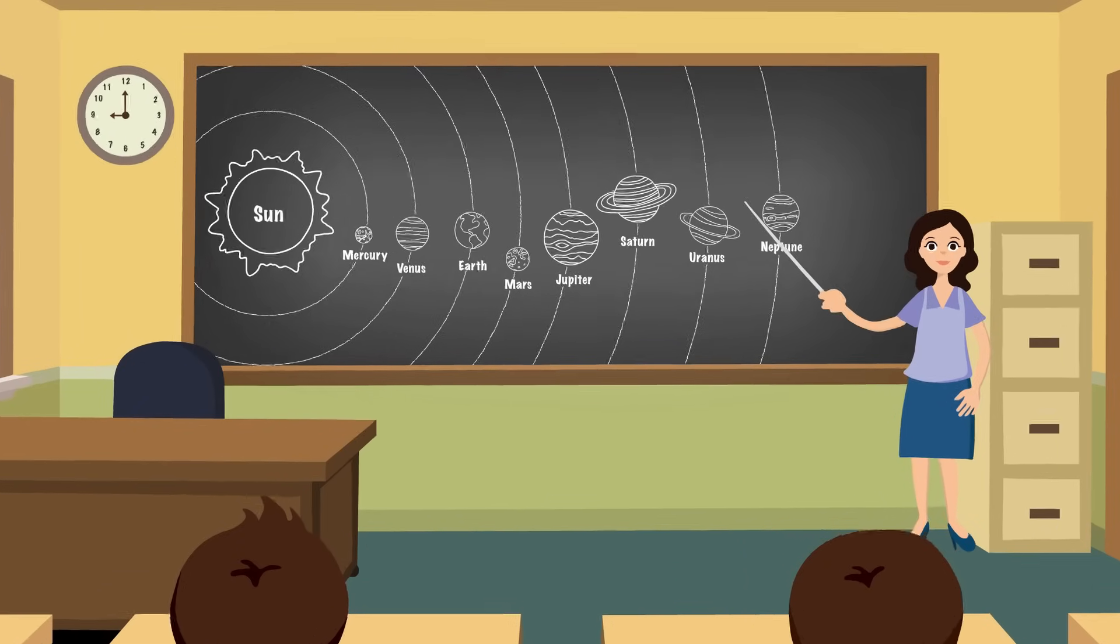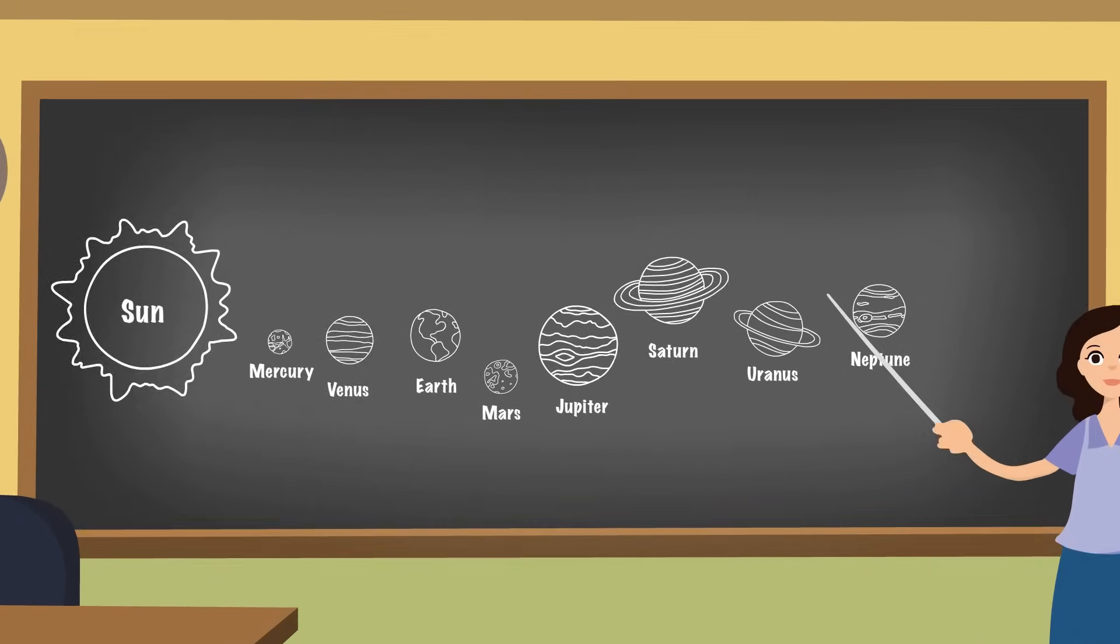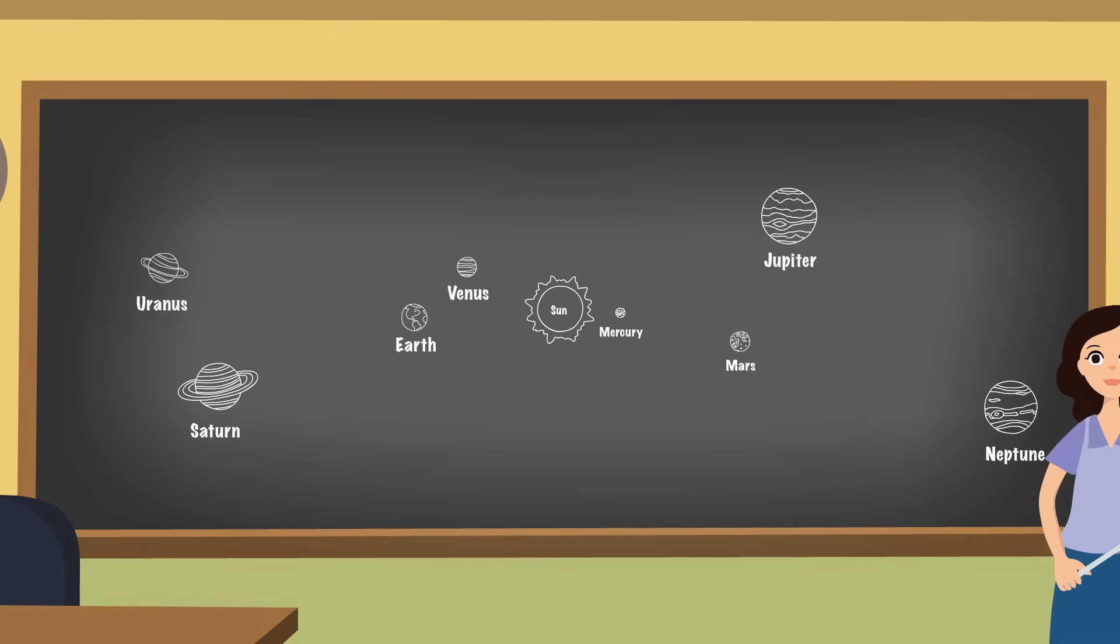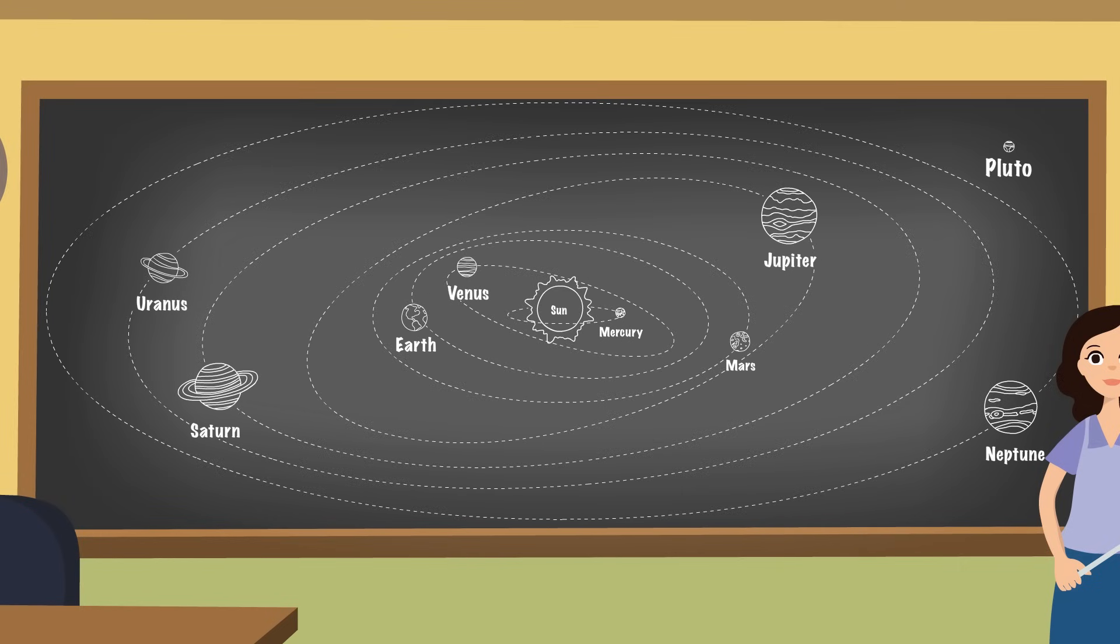Any science classroom would seem incomplete without a picture of our solar system. The sun is always in the center, along with eight planets orbiting it, or perhaps nine, if you love Pluto as much as we do.